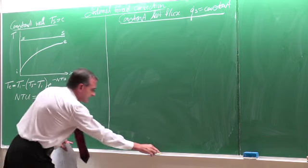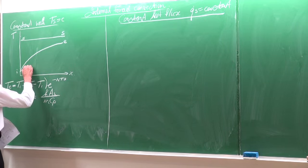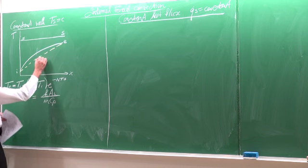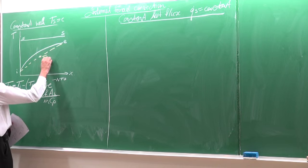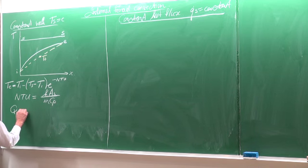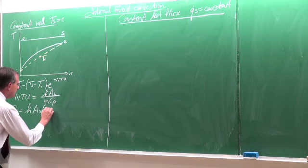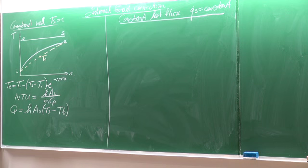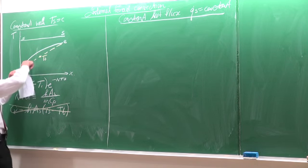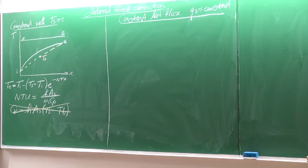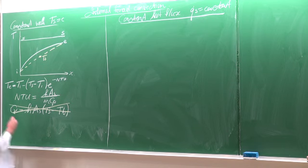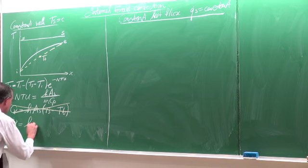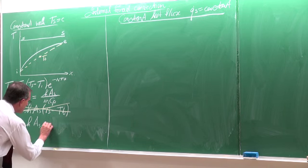Unlike the constant heat flux case, the temperature doesn't increase linearly here. So we cannot simply say heat transfer rate equals h times area times TS minus TB. For that reason, the LMTD approach — the log mean temperature difference approach — was derived, where the heat transfer rate equals the heat transfer coefficient multiplied by the surface area multiplied by the LMTD.